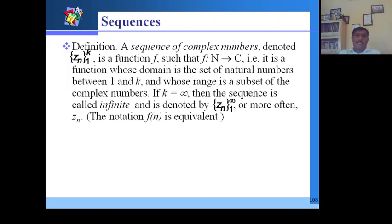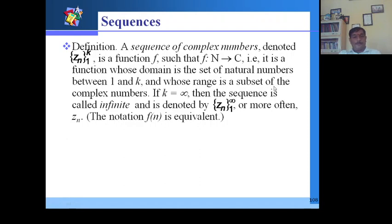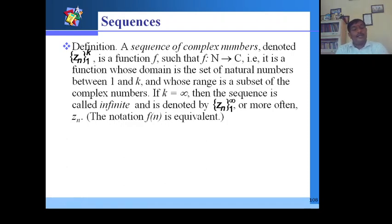Finally, we briefly introduce sequences. A sequence of complex numbers {z_n}, n = 1 to k, is a function f mapping from natural numbers to complex numbers C, where the domain is a set of natural numbers between 1 and k and the range is a subset of complex numbers. If k = infinity the sequence is called infinite, denoted z_n, n = 1 to infinity. Detailed discussion will be covered in the next class.